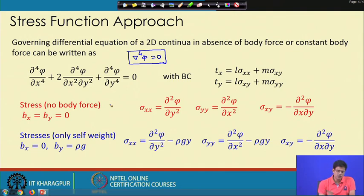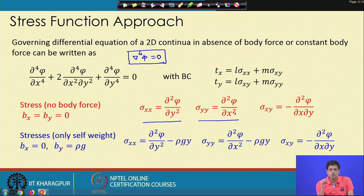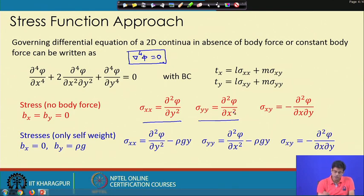The stress function φ, when body forces are zero, is defined such that σxx = ∂²φ/∂y², σyy = ∂²φ/∂x², and the shear stress σxy = -∂²φ/∂x∂y. This φ is known as the Airy stress function.